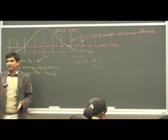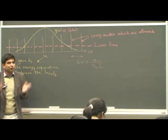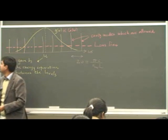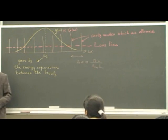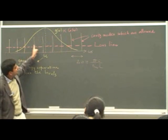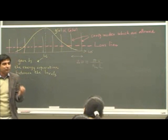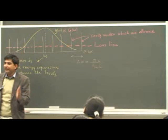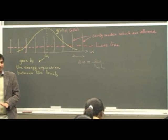Only certain frequencies can be amplified inside the laser cavity — those are the lasing frequencies. Population inversion can occur only between these levels. So now we have a gain function and a loss line, and sustained laser operation can only take place when the gain exceeds the losses.